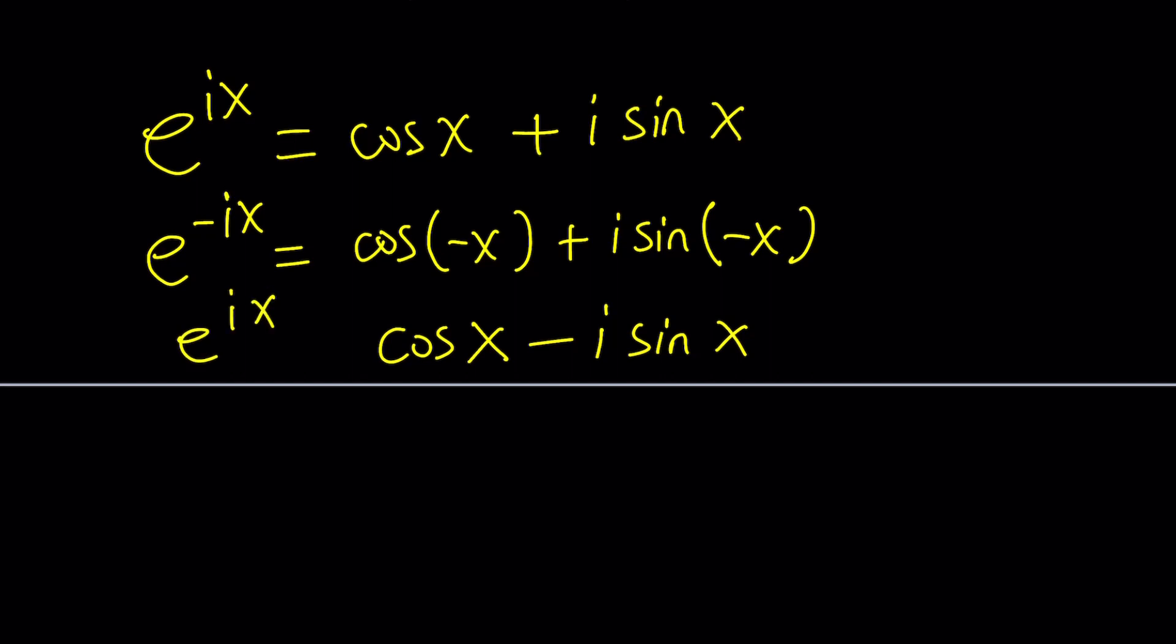So now we've got two equations, e to the negative ix and e to the ix, and we're going to add them. By adding them, we're able to get rid of sine.